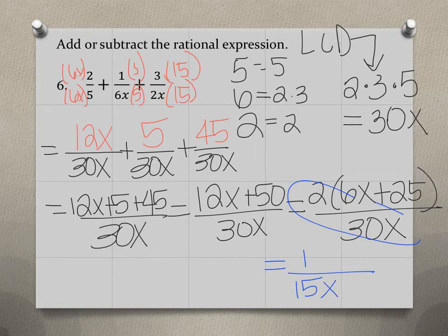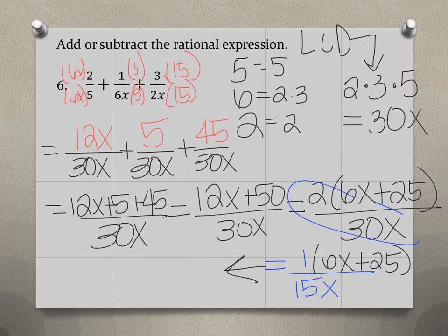And then we'll still have the 6x plus 25. And so if we continue, I'm going to go to the left here. You can just write that as 6x plus 25 divided by 15x.